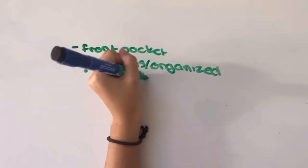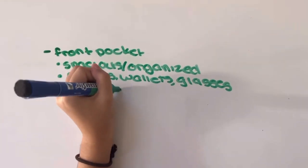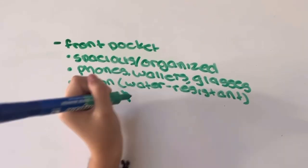In front of the main pocket, there is another area with the ability to store your phones, wallets, glasses, and much more. This area will consist of a water resistant material called nylon.